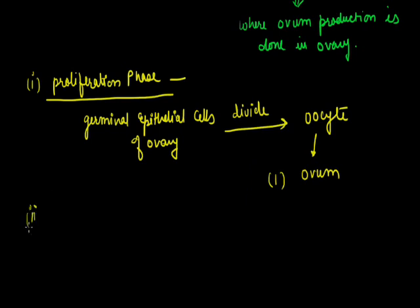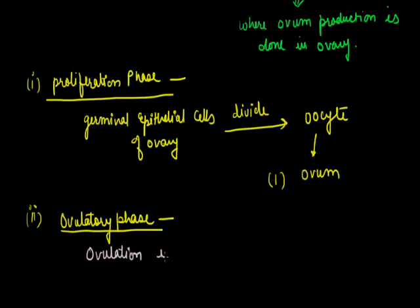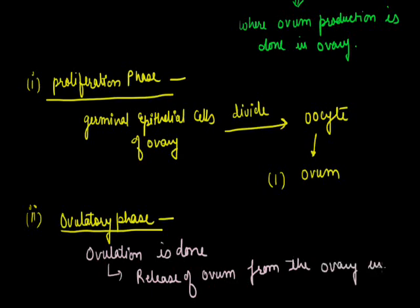The second step is known as ovulation or ovulatory phase. This is the phase where ovulation is done. Now the point is what is ovulation? It's release of ovum from the ovary into the coelom. This is usually done from the 13th to 15th day of this cycle.